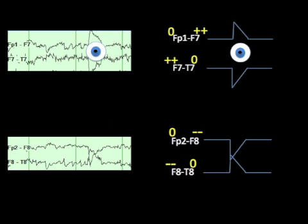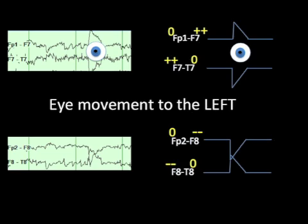If we look down at the first two channels in the right temporal chain, we see that the tracings are moving toward each other, eliminating space so that we could not put an eyeball in this space. This further confirms that this is an eye movement to the left.